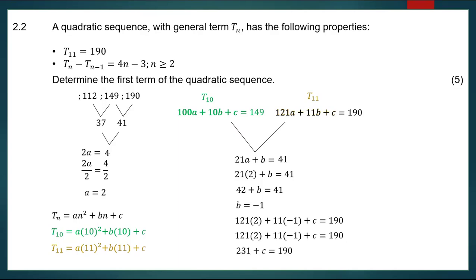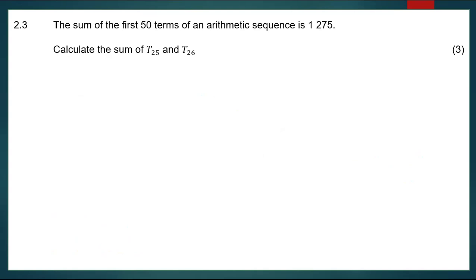The value of c equals negative 41. Substituting into the general term gives tn equals 2n squared minus n minus 41. To find the first term substitute n equals 1, and you get negative 40. That's how you calculate the first term. Please check out the next video for the following question, and remember the exam workshop is from the 1st to the 4th of May — check the description for more information.